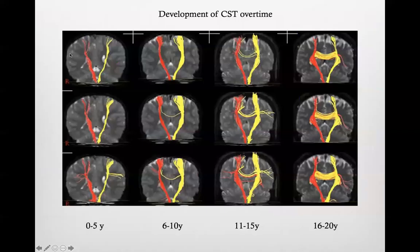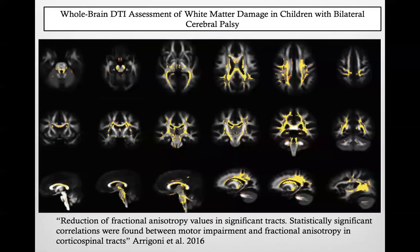We can also see how the corticospinal tract becomes thickened over time, so we can visualize not only demyelination per se, but also the development over time of specific tracts. Something different was done by Filippo Aragonni in Italy back in 2016 — these white areas are regions damaged in a population of children with cerebral palsy when compared with normal controls using DTI. You can see that a lot of areas are damaged in children with bilateral cerebral palsy.